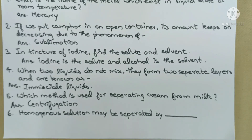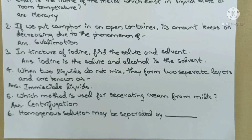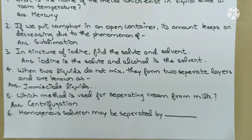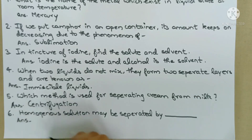Next question: Homogeneous solution may be separated by which method — chemical processes or physical processes? To separate a homogeneous solution like sugar dissolved in water, we use physical methods such as filtration. We can also use chemical methods for homogeneous solutions.